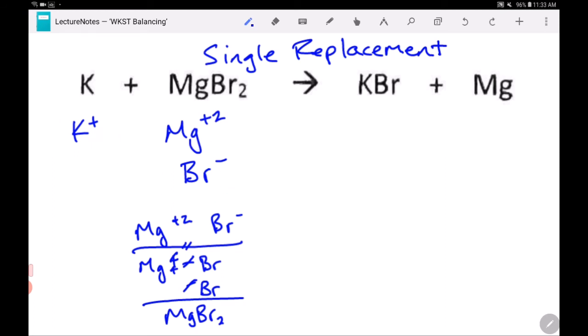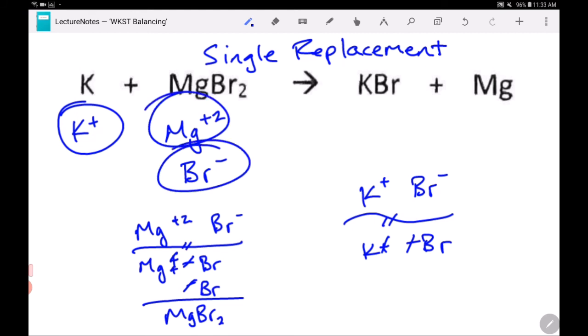That's where KBr comes from. Now it's KBr because potassium is plus one and bromide is minus one. So they come together with a one to one ratio. That leaves magnesium by itself. When magnesium is by itself, it's not diatomic, so there's only one magnesium. You can spot a single replacement reaction because there's three things.